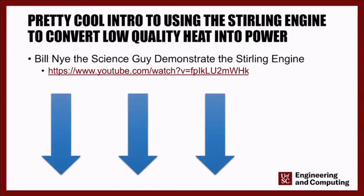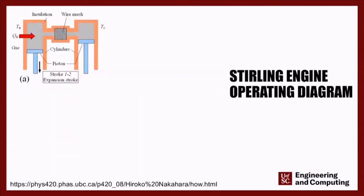The second thing I really like about the Stirling engine is that, unlike the Otto cycle or the Carnot cycle, this happens with two piston cylinders that work in tandem with one another. They're mounted to the same flywheel, and so flywheel momentum is going to be an interesting consideration during our discussion of the Stirling engine.